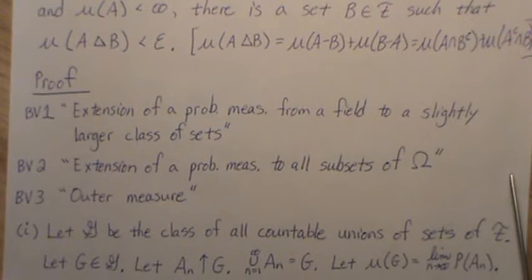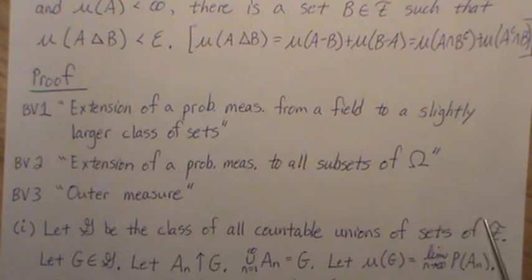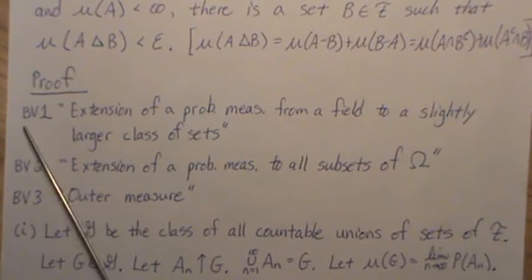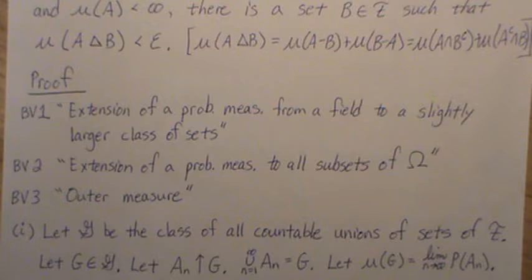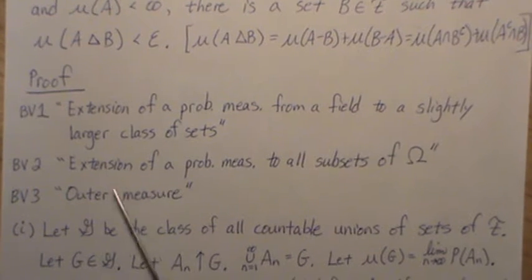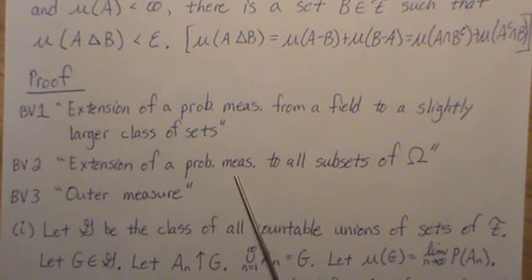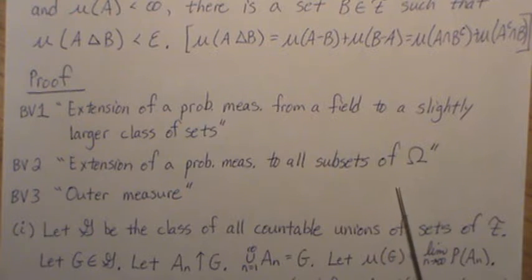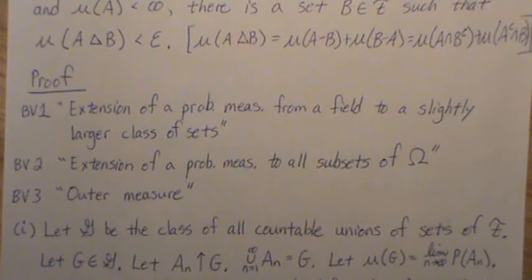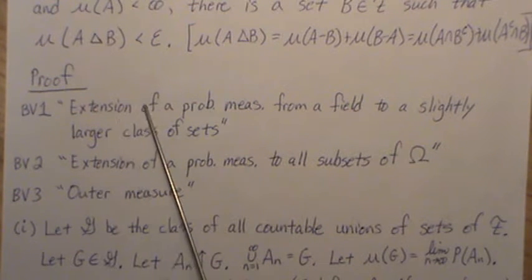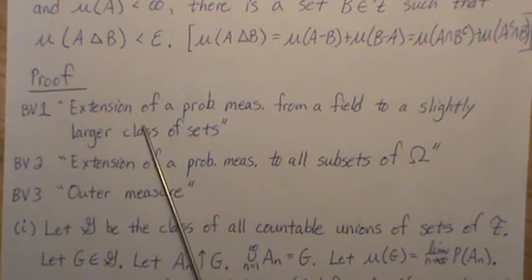And so here's a proof. We're going to make reference to three videos: BV1, background video 1, it's extension of a probability measure from a field to a slightly larger class of sets. BV2 is extension of a probability measure to all sets of omega. And BV3 is an outer measure. So let's let G, and we're going to work in this video first.